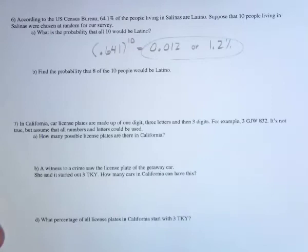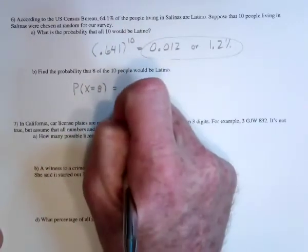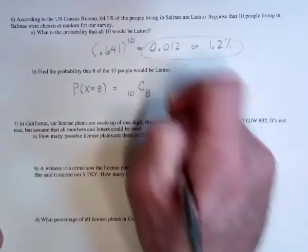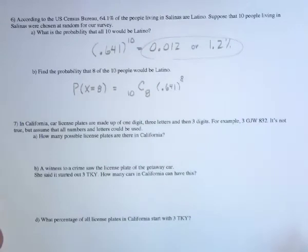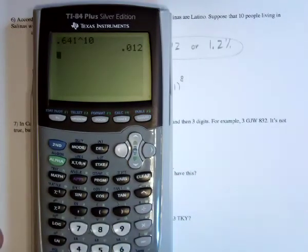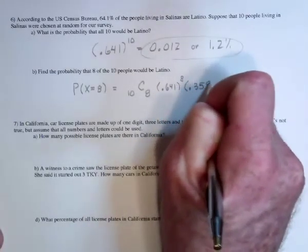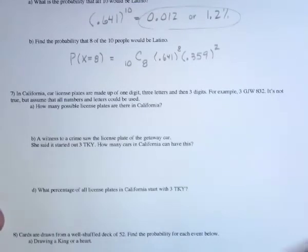Find the probability that 8 of the 10 would be Latino. For this we use the binomial formula, which says the probability that x equals 8 people. First, we need out of the 10 people, find all the combinations of 8 of them being Latino. Then take the probability of being Latino, and we've got 8 Latino people. Now we need to find the chances of being not Latino, so 1 minus 0.641, or 0.359 is the chance of not being Latino, and then there would be 2 of those people out of the 10.